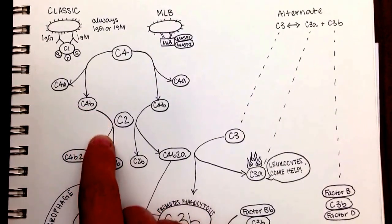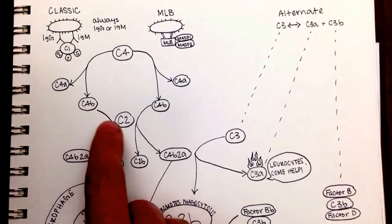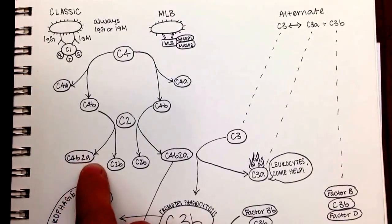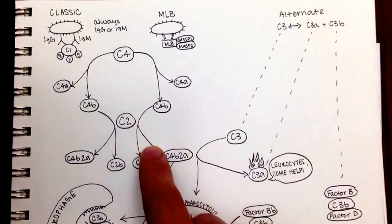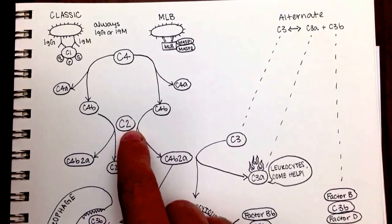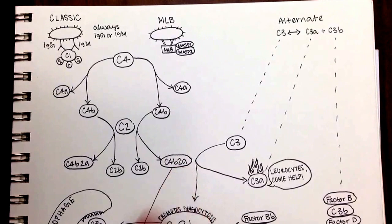So we're taking the C2a part and we're going to combine it with the C4b. So we see that we have the C4b here that broke the C2. We're going to keep the C2a. So we're going to get this thing called the C4b2a. And the same thing can happen here. C4b2a made of C2, the A part, and the C4b. So C4b2a.